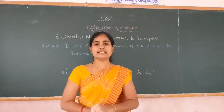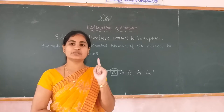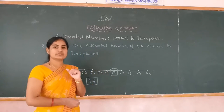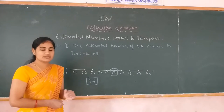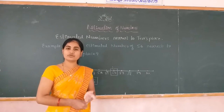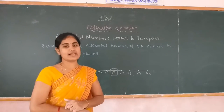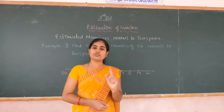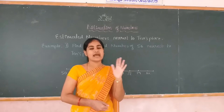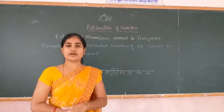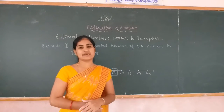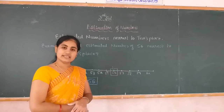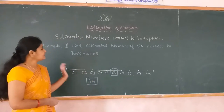These are the three conditions to write the estimated number of a given number. If the unit place number is less than 5, write the previous tens place. If it is more than 5, write the next tens place. If it is equal to 5, also write the next tens place. You will then get the estimated number of the given number.